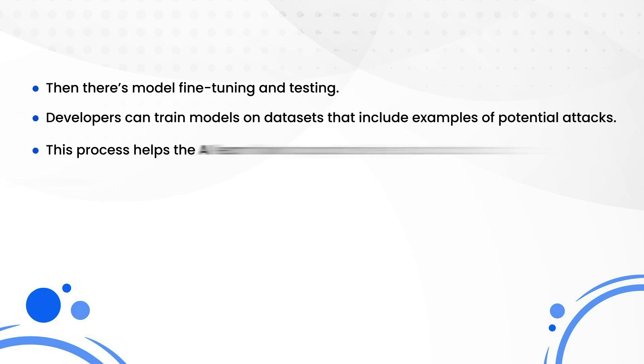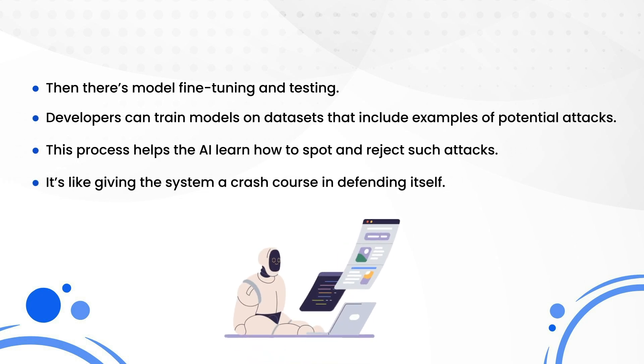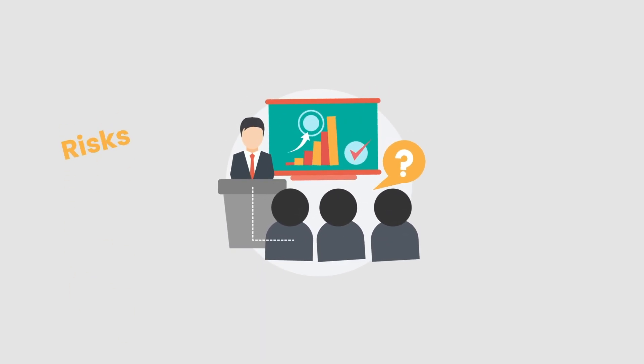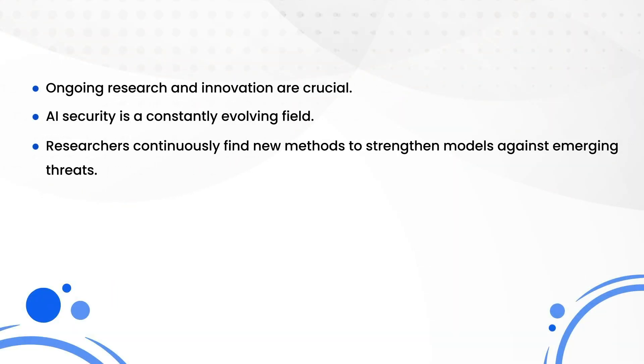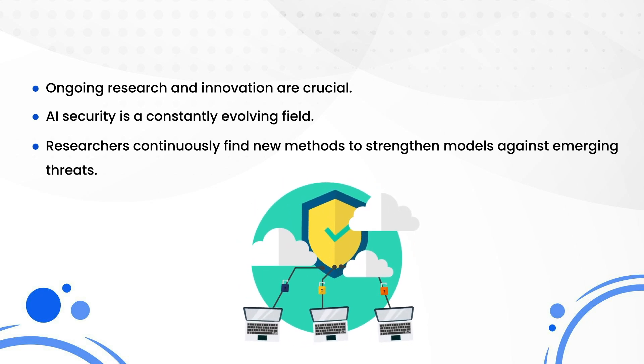Then there's model fine-tuning and testing. Developers can train models on datasets that include examples of potential attacks, helping the AI learn how to spot and reject them — it's like giving the system a crash course in defending itself. But it's not just about technical fixes; raising awareness is crucial. Organizations using AI tools need to educate their teams about these risks and encourage responsible usage. After all, the more people understand the threat, the better prepared they'll be to prevent it. Lastly, ongoing research and innovation play a huge role, as AI security is a constantly evolving field. While no system can ever be 100% foolproof, combining these strategies can go a long way in making AI systems safer and more resilient.